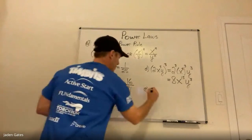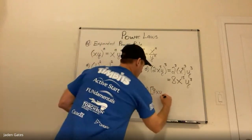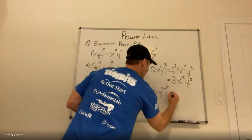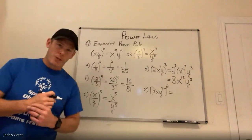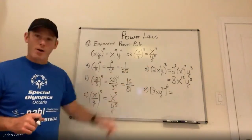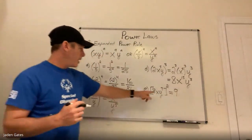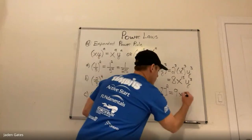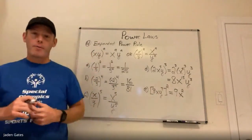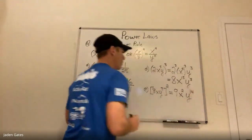Another expanded power example: 3xy⁷ all squared. Apply the exponent of 2 to every term. Three squared is 9. X squared is x². And y⁷ squared is a power of a power: keep the base y, multiply 7 times 2 to get y to the power of 14. Final answer: 9x²y¹⁴.